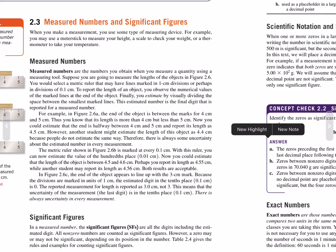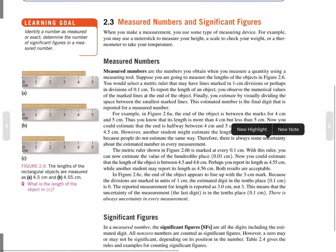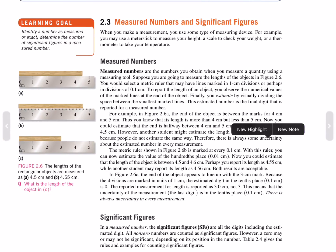Measured numbers are the numbers you obtain when you measure a quantity using a measuring tool. Suppose you are going to measure lengths of objects in Figure 2.6. You would select a metric ruler that has lines marked in 1 cm divisions, or perhaps in divisions of 0.1 cm. To report the length of an object, you observe the numerical values of the marked lines at the ends of the object. Finally, you estimate by visually dividing the space between the smallest marked lines. This estimated number is the final digit that is reported in the measured number.